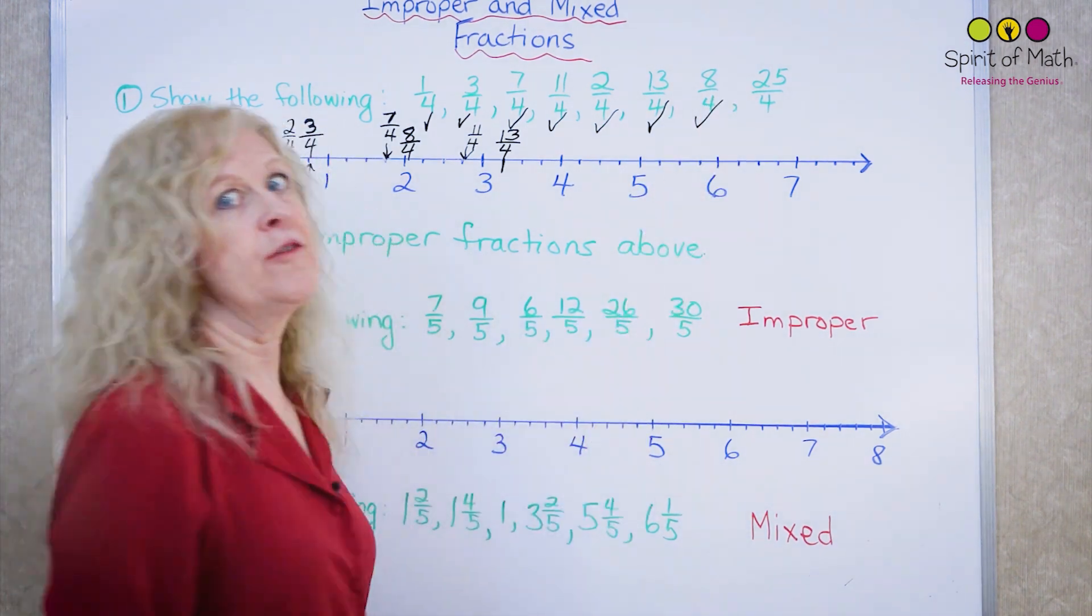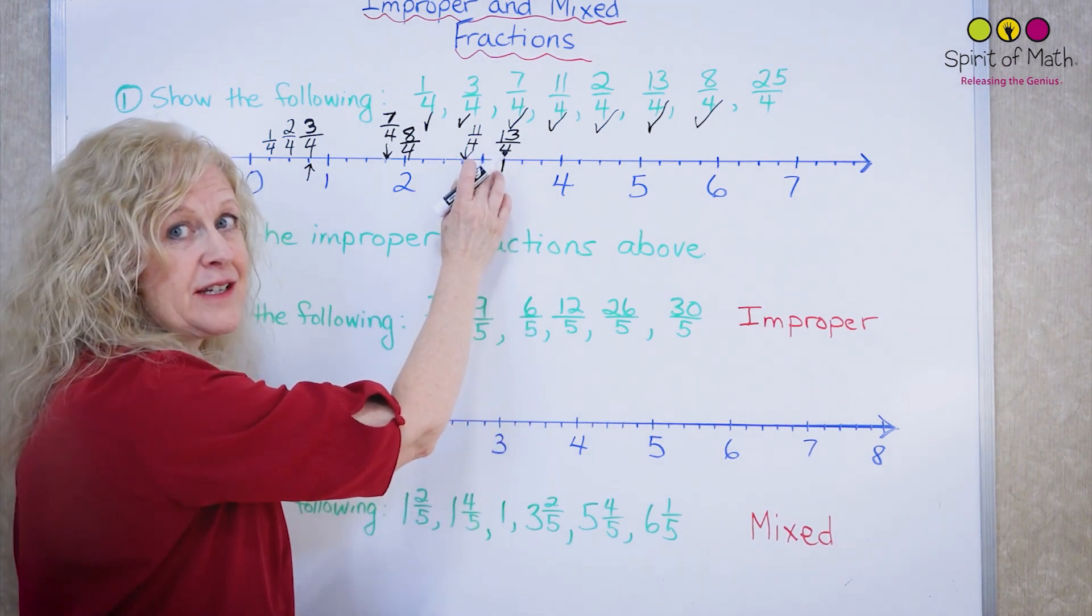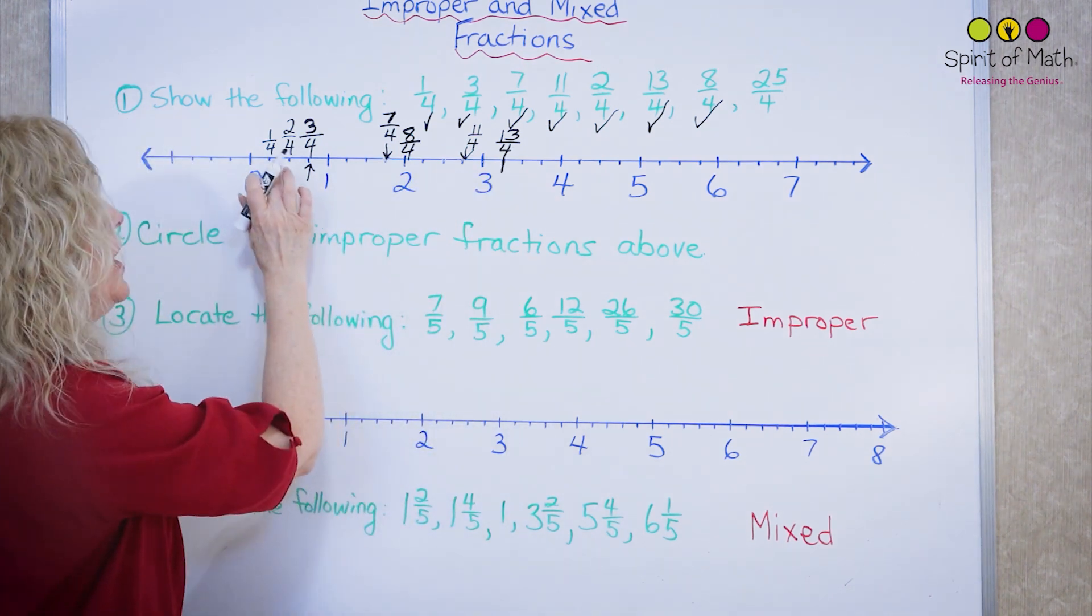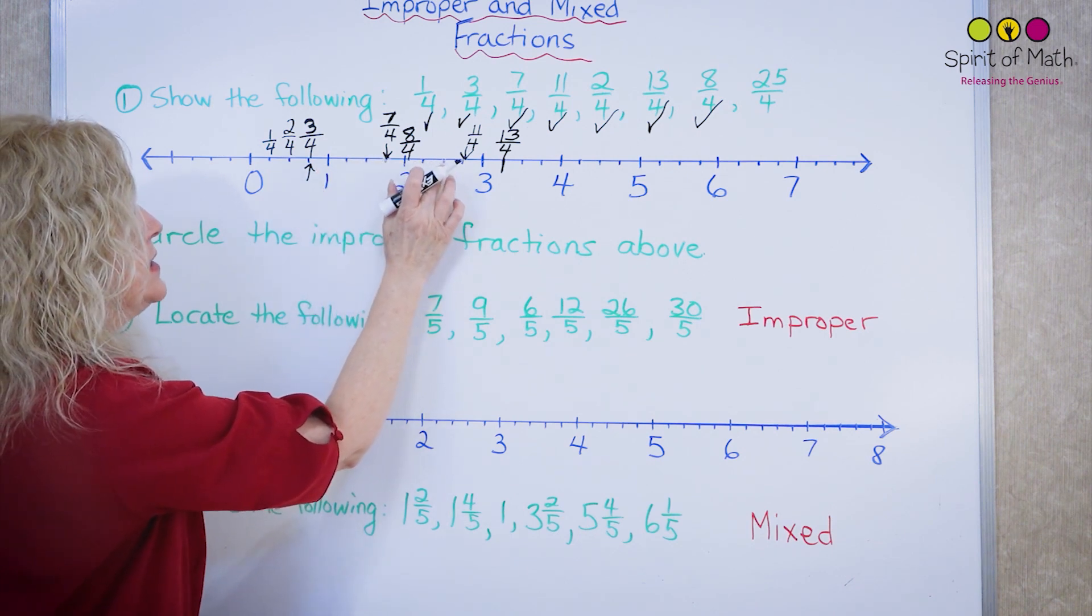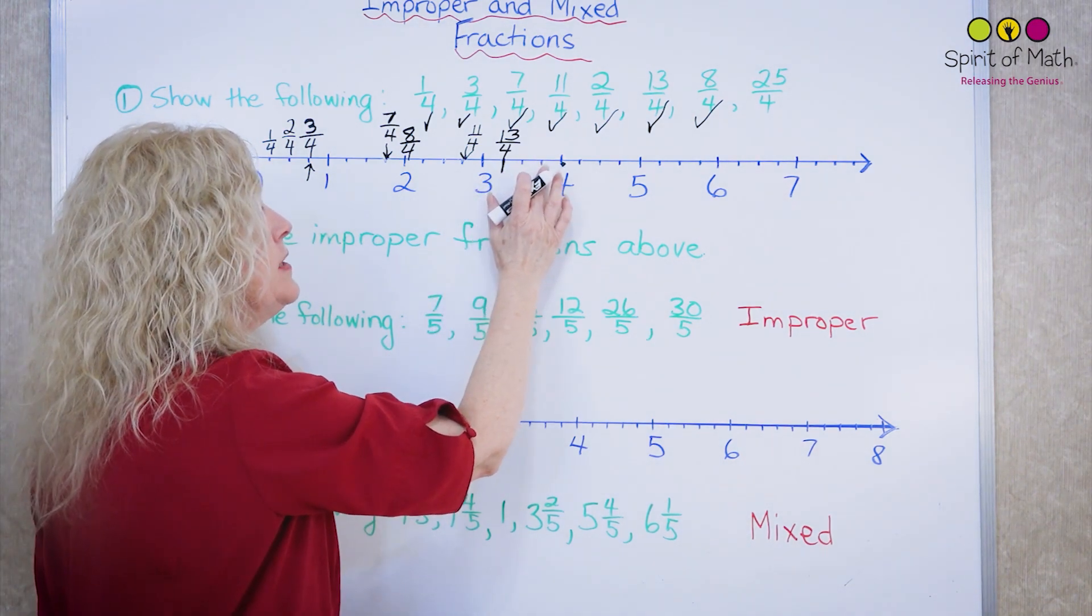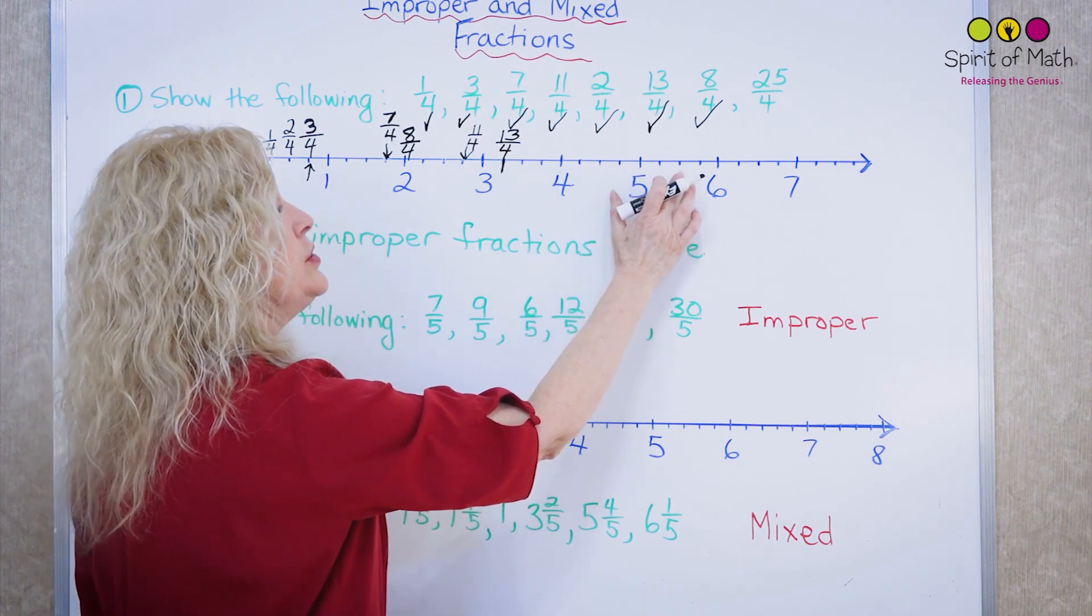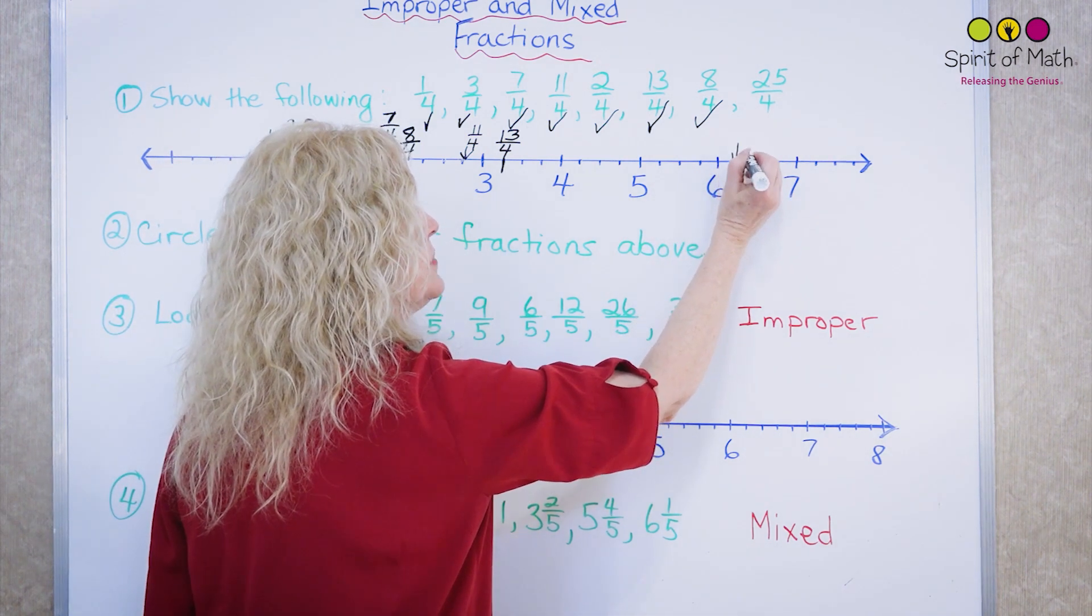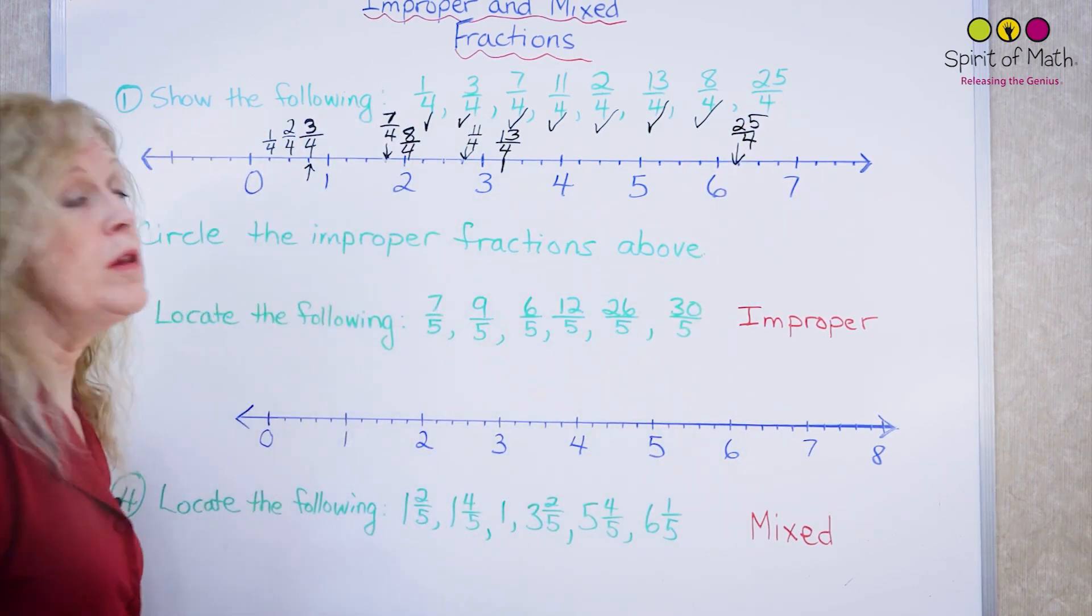And now twenty-five quarters. I'm going to hope that this thirteen is correct, or I'm just going to go back and double check. One, two, three, four, five, six, seven, eight, nine, ten, eleven, twelve, thirteen. That thirteen is good. Now let's go up to twenty-five. Thirteen, fourteen, fifteen, sixteen, seventeen, eighteen, nineteen, twenty, twenty-one, twenty-two, twenty-three, twenty-four, twenty-five. It's the tick right after that six, and that is twenty-five over four. I've done all of those.